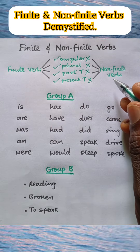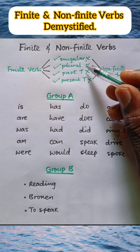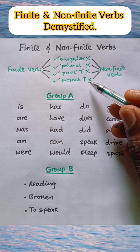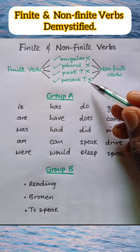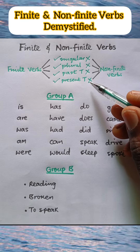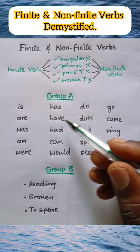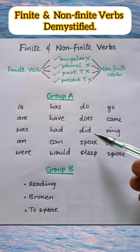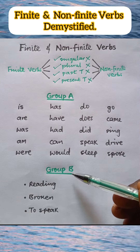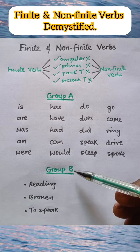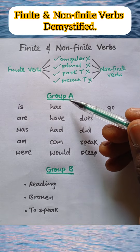A non-finite verb is a verb that is neither singular nor plural, neither past tense nor present tense. They are unique and perform their unique roles in sentences. Here we have a list of verbs and we have classified them into group A and group B. We are going to tell for each one if it is a finite or non-finite verb. Let us start with group A.